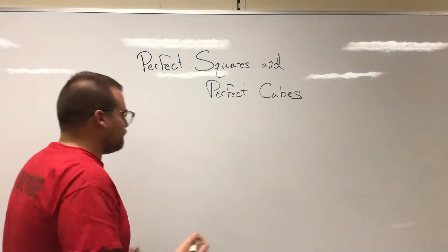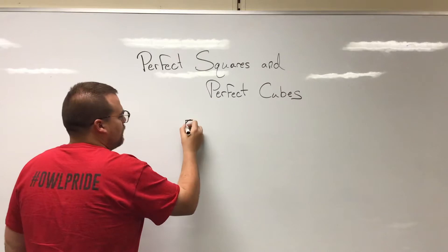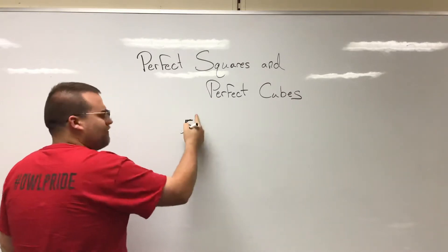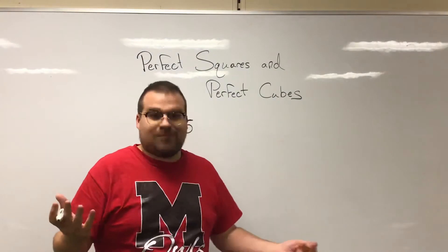So, if we have a base number, let's say five, then it could have an exponent with it of two, three, four, five, six, well anything really.